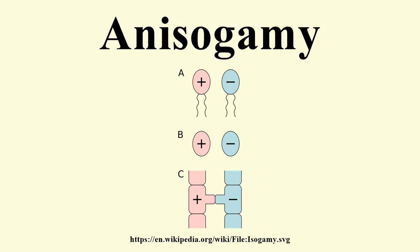Females produce large gametes known as proto-ovum, which are energetically expensive to produce but have the advantage of allowing for early embryogenesis. Males, on the other hand, produce several tiny gametes which are energetically inexpensive and can be produced in high frequencies, thus investing minimum amounts of energy to create viable gametes able to fertilize female gametes. Intermediary gametes offer none of the advantages at either end of the spectrum — they require too much energy to be produced in high numbers, yet their size prevents embryogenesis.